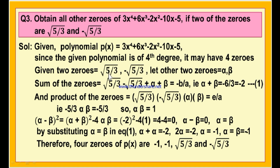Now let us find the sum of all the zeros. The 1st zero is √(5/3), 2nd zero is -√(5/3), 3rd zero is alpha, and 4th zero is beta. The sum of the zeros of a polynomial is equal to -b/a. Since √(5/3) and -√(5/3) cancel each other, we get alpha plus beta equals -b/a, which is -6/3. Therefore, alpha plus beta is equal to -2. This is the first equation.